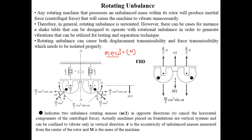We are only concerned with vibrations in the vertical direction. The horizontal components of the centrifugal forces from the two rotors balance each other. The vertical components both act in the downward direction, so their effects add together. The total vertical component is (m/2)eω² sin(ωt), acting in the direction of the vibration response.